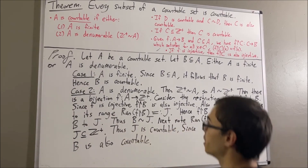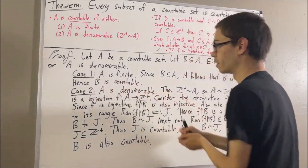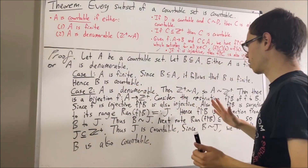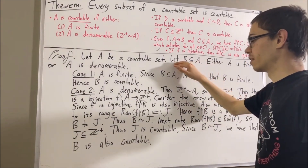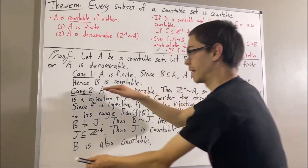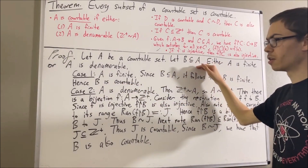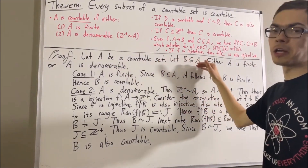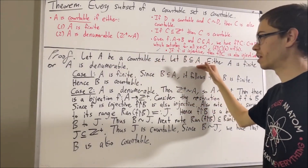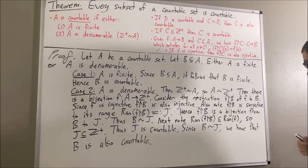In either case, we have shown that B is countable. Putting this together, we gave ourselves an arbitrary subset of A and found that it's countable. So every subset of A is countable. Given any countable set, every subset of that countable set is countable — and that's exactly what we wanted to prove. This completes the proof.